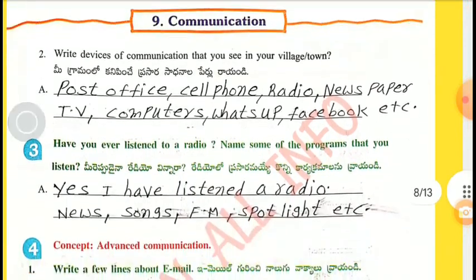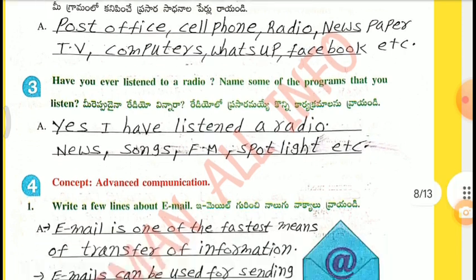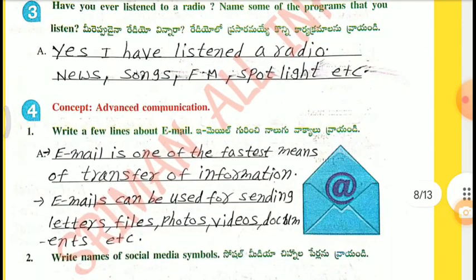2nd one — Write devices of communication that you see in your village or town: post office, cell phone, radio, newspaper, TV, computers, WhatsApp, Facebook, etc. 3rd one — Have you ever listened to a radio? Name some of the programs that you listen. Yes, I have listened to a radio. News, songs, FM, spotlight, etc.